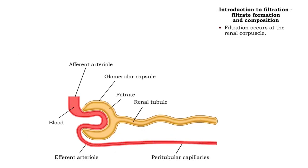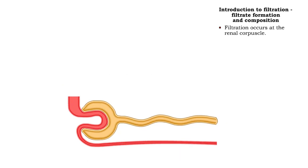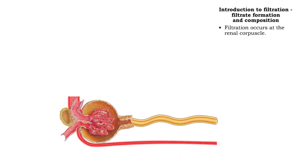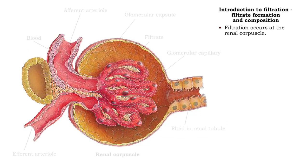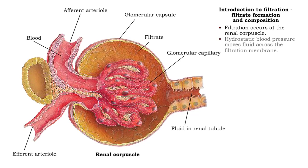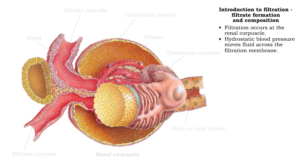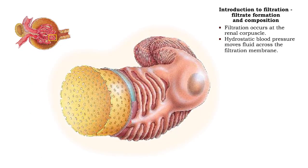Filtration occurs only at the renal corpuscle. Hydrostatic blood pressure is used to move fluid across the filtration membrane.